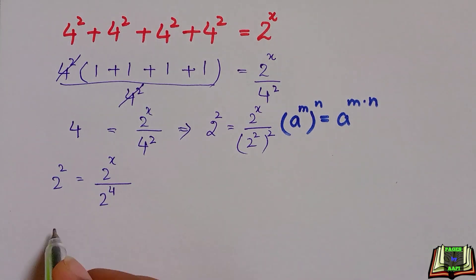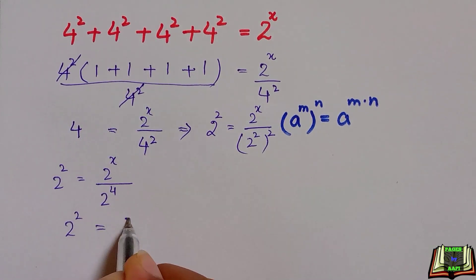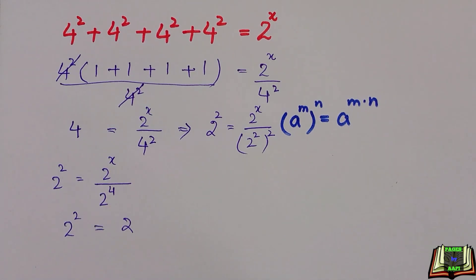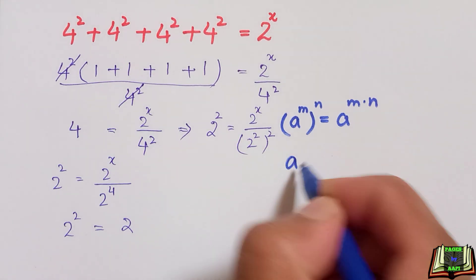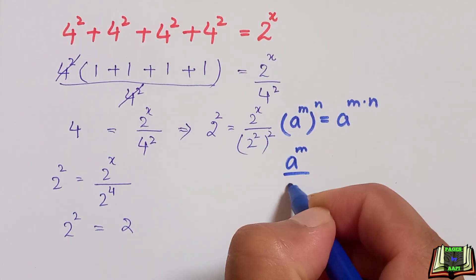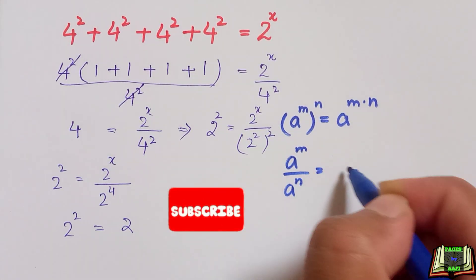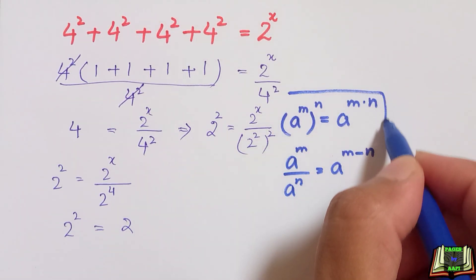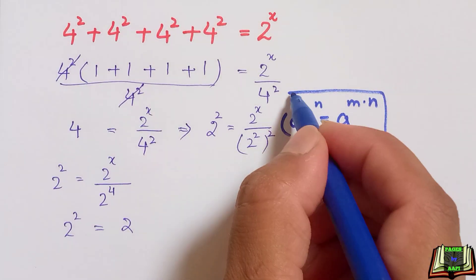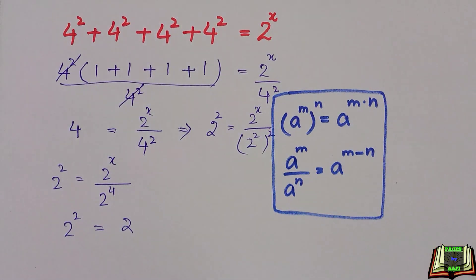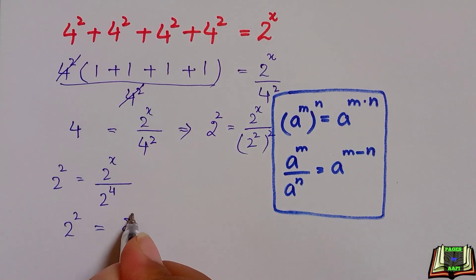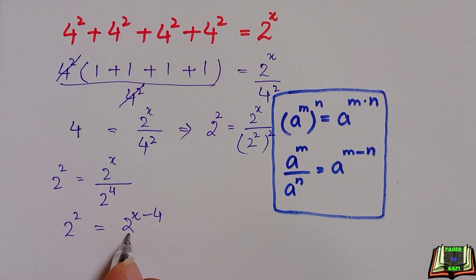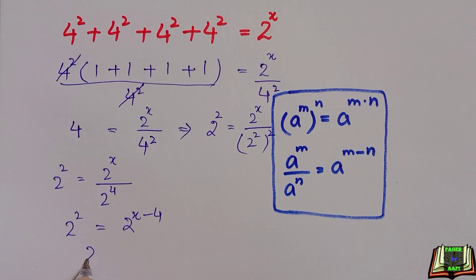In the next step, 2 raised to power 2 equals 2 raised to power x divided by 2 raised to power 4. Since two numbers are dividing with the same base and different exponents, the exponents are subtracted: if a raised to power m over a raised to power n, we can write it as a raised to power m minus n. So we get 2 raised to power 2 equal to 2 raised to power x minus 4.